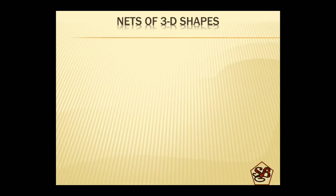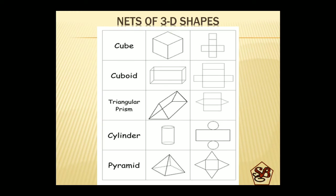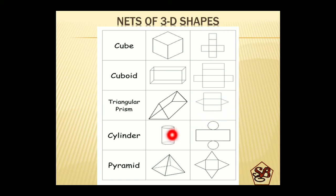Nets of 3D shapes. We know that 3D shapes like cube and cuboid are formed by using certain nets. A cube has 6 squares joined together. A cuboid has 4 rectangles and 2 squares joined together. A triangular prism has 3 rectangles and 2 triangles. A cylinder — you will be surprised to know — is formed by a rectangle and 2 circles. A pyramid has 4 triangles and a square base.